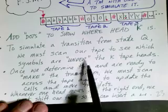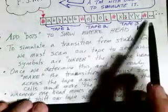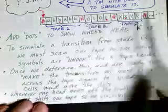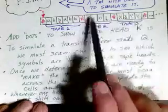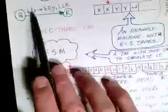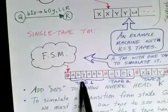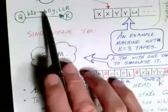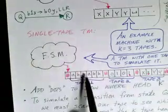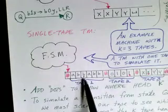And then again, we must scan across the tape again to update the cells and move the dots. So in this case, if we determine that we can take this transition, then our single-tape Turing machine is going to have to do a bunch of work.